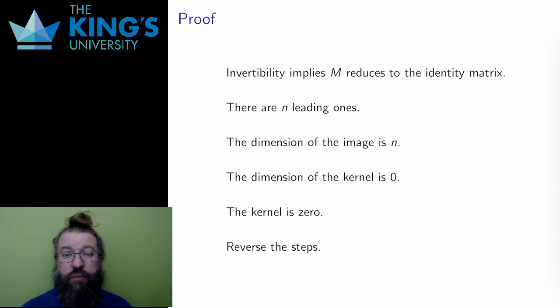What is the proof? Well, let me go back to invertible matrices. A matrix was invertible if it reduced to the identity, if it had rank n, if it had n leading ones in its reduced form. Well, the dimension of the image is the rank. So invertible means that the dimension of the image is the maximum, is n.